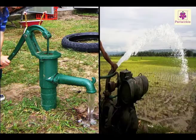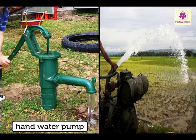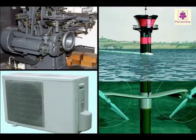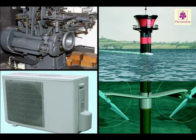Some machines are worked by hand, others are powered by electricity. Some have solid moving parts, some have liquids, while some have air.